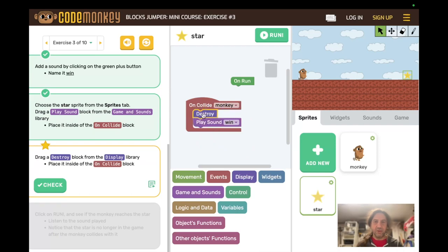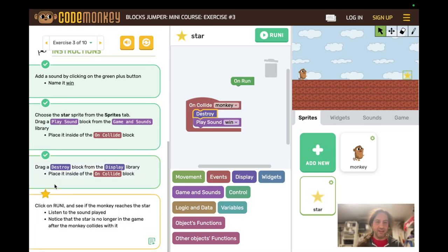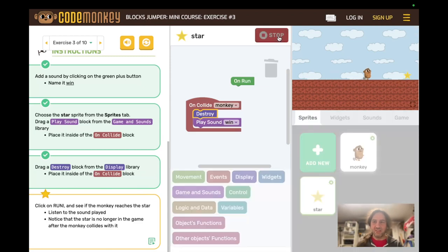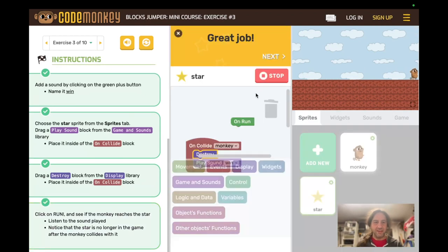And we want to drag a destroy block from the display library and place that inside the on collide block. Now I'm pretty sure if I put them in the wrong order technically the code would work but if I check it, oh I had a student do this and it didn't work so something else might have gone on. If it doesn't work and you can't figure out why sometimes just reloading the page will get it back into a state where you can go through the instructions again. Let us run and see if the monkey reaches the star. It played a sound and the star disappeared. Next.